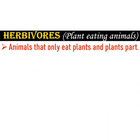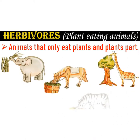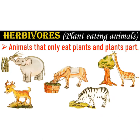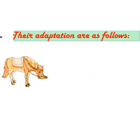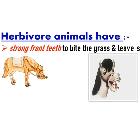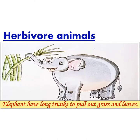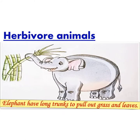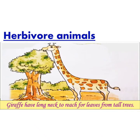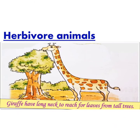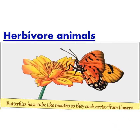Animals that eat only plants and plant parts are called herbivorous. Elephants, giraffes, horses, zebras, and deer are some examples. Herbivorous animals have strong front teeth to bite grass and leaves, and strong flat grinding teeth at the back to chew food. Elephants have long trunks to pull out grass and leaves. Giraffes have long necks to reach leaves from tall trees. Butterflies have tube-like mouths to suck nectar from flowers.